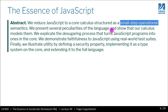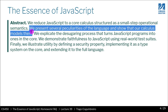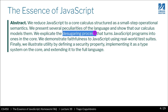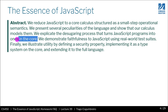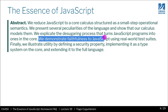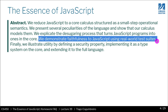The authors present several peculiarities of the language and show that their calculus models them. They include a benchmark full of examples that showcase the difficulty of implementing JavaScript and how their tool is able to cope with such difficult cases. They also explicate the desugaring process — which is what you are implementing in homework 8 — that turns JavaScript programs into ones in the core. Here the core is Lambda JS, which is the target language. They demonstrate faithfulness to JavaScript using real-world test suites that Firefox and other browsers use.